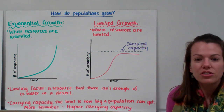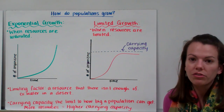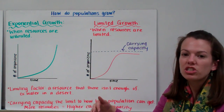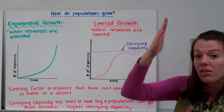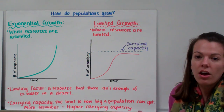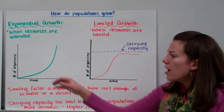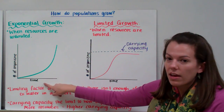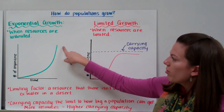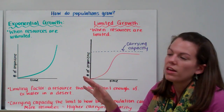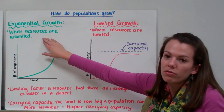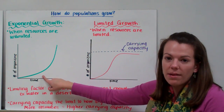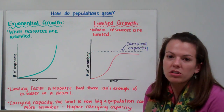Now let's look at how populations can grow over time. Exponential growth is caused when resources are unlimited. The population just keeps growing and growing because there's no limit on resources. If we plot the number of organisms over time, we see the population grows all the way to infinity. This is called a J-curve because it looks like the letter J.